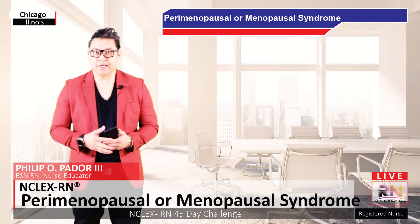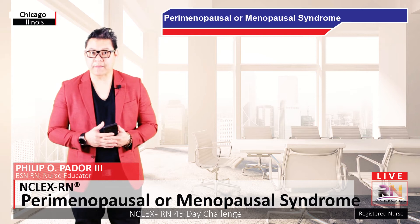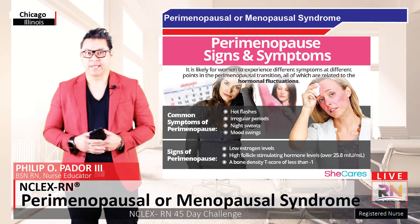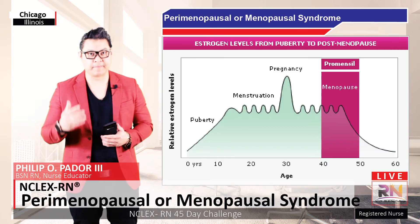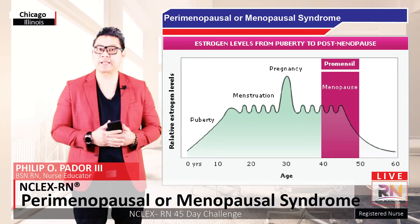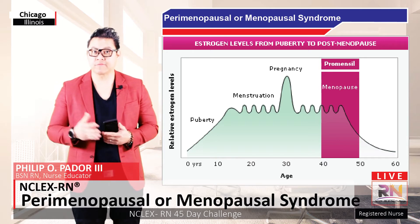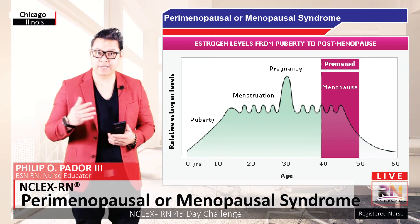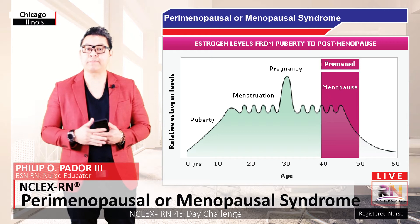Hi, this is Philip Ador, founder of NCLEX RN 45 Day Challenge. In this video, I'm going to be talking about perimenopausal or menopausal syndromes. Menopause is defined as amenorrhea occurring more than 12 months. Amenorrhea means the absence of menstruations. Another biochemical sign is a decrease in estrogen, which relates to a depletion of follicles in the ovaries. It is important to look at the changes of estrogen levels throughout the female life cycle to see how menopause occurs.